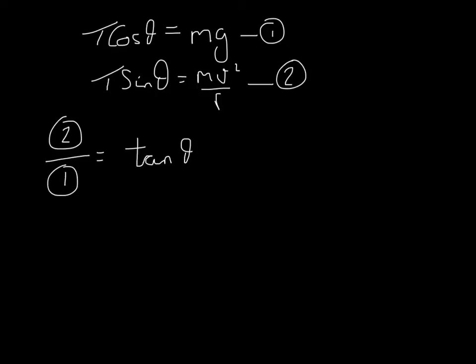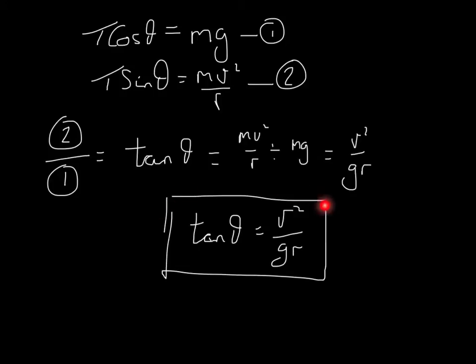If you divide equation two by equation one, then the left hand sides, you get T sin theta over T cos theta. The T's will cancel. And sin theta over cos theta will combine to give you the tan of theta. And then you need to divide the right hand sides. And so you get MV squared over R divided by MG, which gives you V squared over GR. And this result is a fairly common thing that you would be asked to find in cases where you're dealing with a conical pendulum.